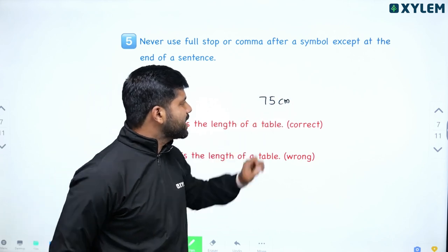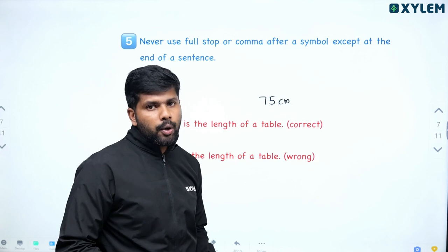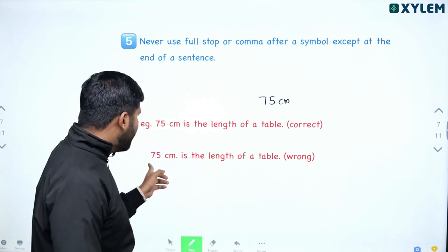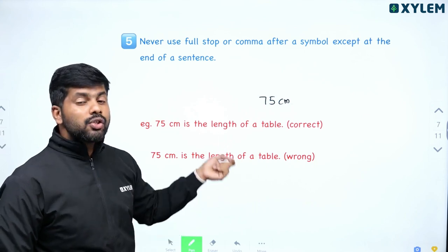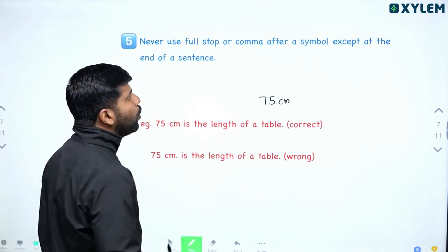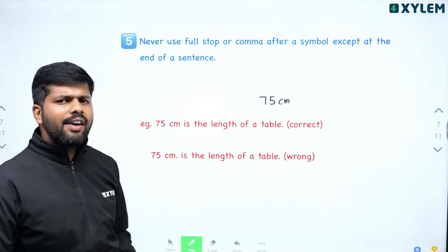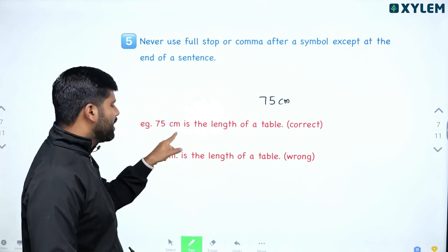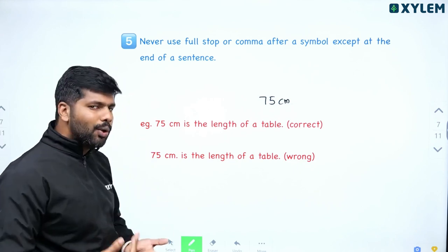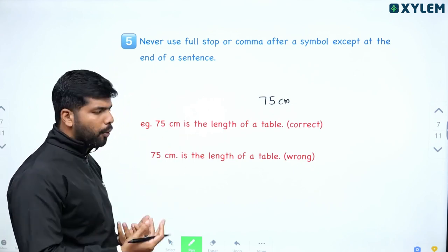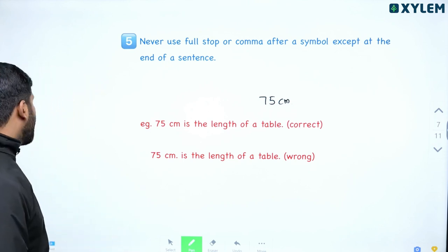If you have a full stop in a sentence, you can use a full stop at the end, but do not place a full stop or comma after a unit symbol mid-sentence. For example, writing '75.cm' for the length of a table is wrong. Do not use a full stop or comma after a symbol except at the end of a sentence.